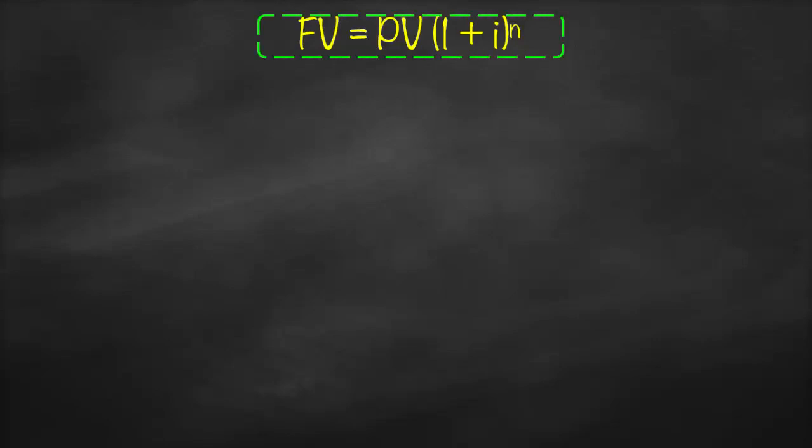This will be our first formula. Now, if we'd like to get present value, we need to divide both sides by (1 plus i) to the power n. Therefore, our present value is equal to future value divided by (1 plus i) to the power n.